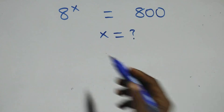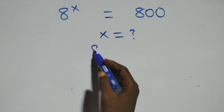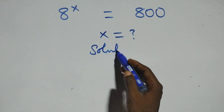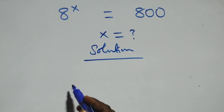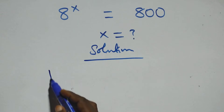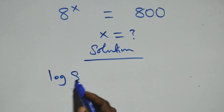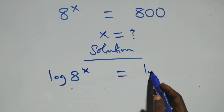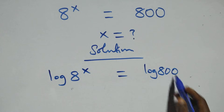How to solve this nice exponential equation? Starting the solution here, we take the log on both sides. We have log 8 raised to the power x equals to log 800 on the right side.